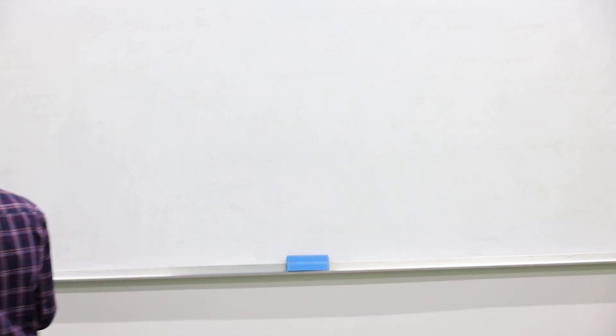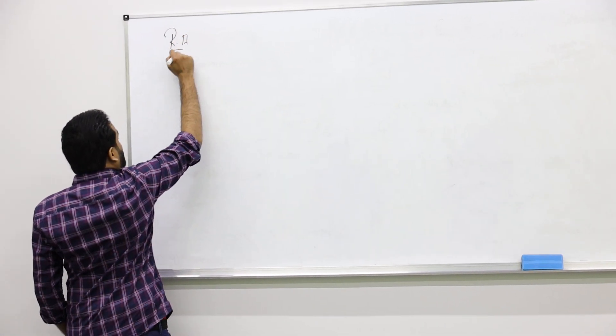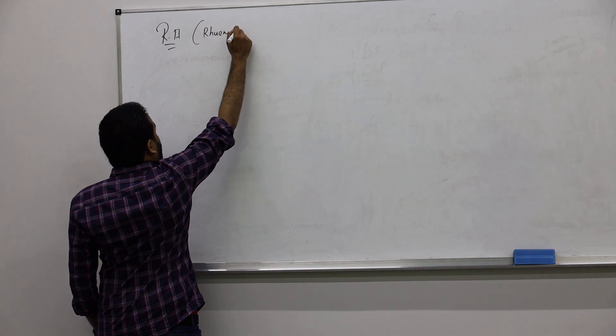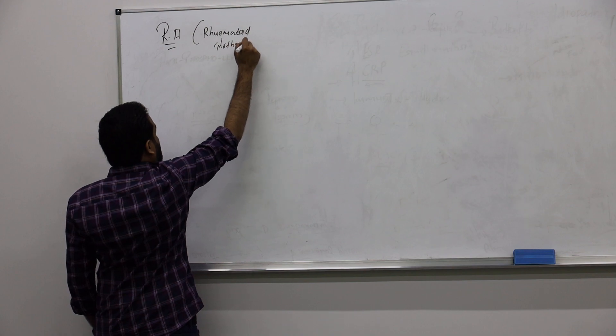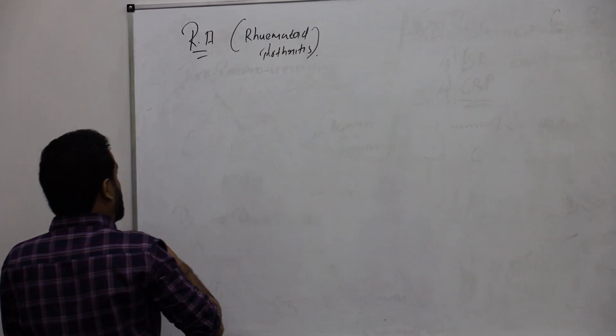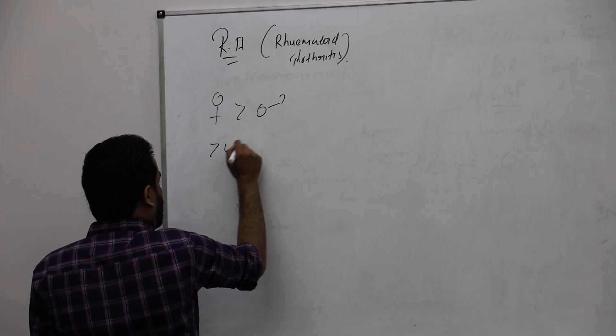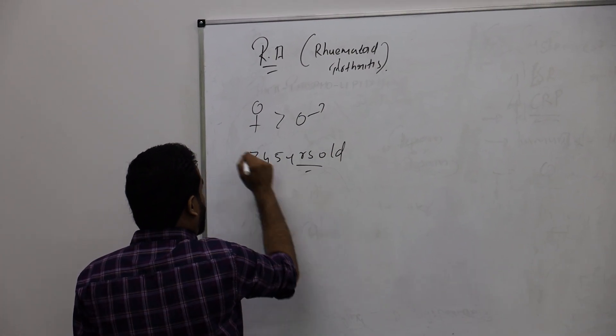Next topic: Rheumatoid arthritis. Let's talk about RA, rheumatoid arthritis. It's an autoimmune disorder. Mainly seen in females more than males, more than 45 years old people.